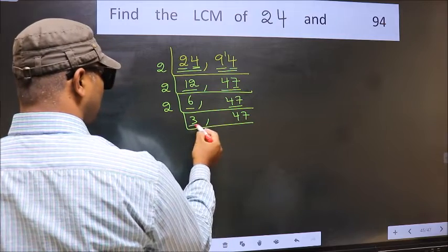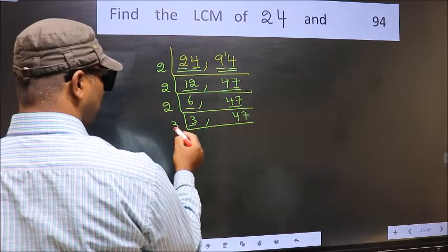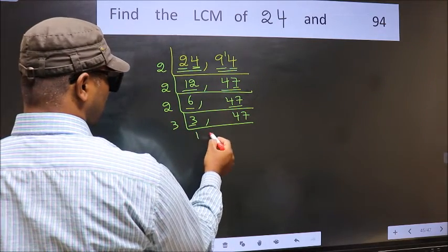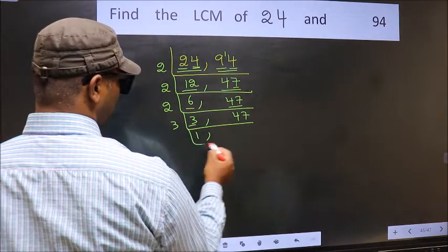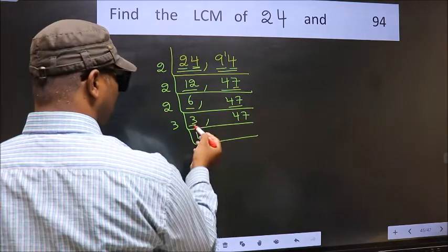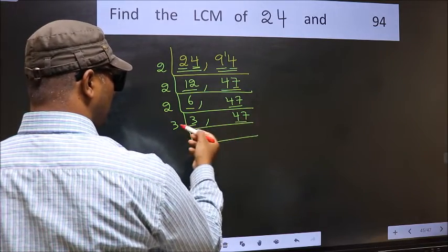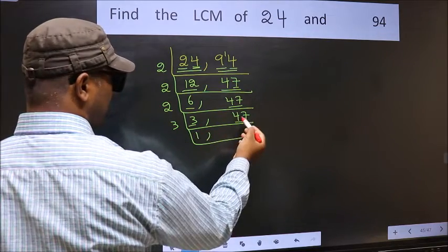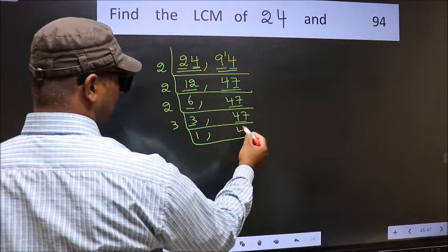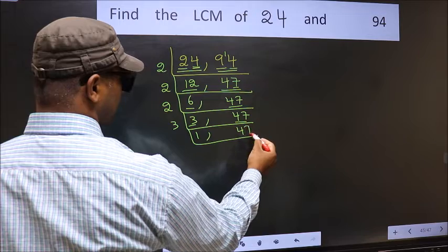Now here we have 3. 3 is a prime number, so 3 ones are 3. The other number 47 is not divisible by 3, so we write it down as it is.